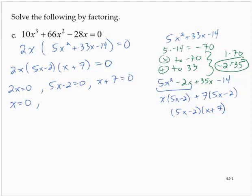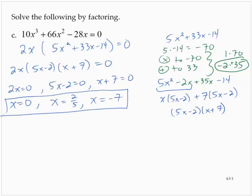If 5x minus 2 is equal to 0, adding 2, dividing by 5, x is equal to 2 fifths. If x plus 7 is equal to 0, subtracting 7, x is negative 7. Three solutions to the equation.